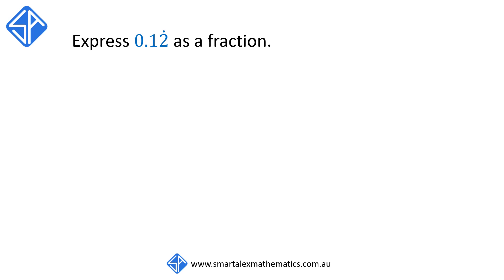For our first example, we're going to be converting 0.12 repeater to a fraction. When we have 0.12 with the repeater symbol on top of the 2 only, this is equivalent to 0.12222. It's only the digit 2 that gets repeated.